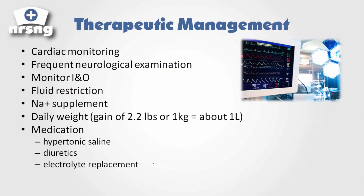So how are we going to assess and take care of our patient? First, we want to do cardiac and neurological monitoring — we really want to assess that the patient isn't reaching a point of seizures or coma and to monitor their heart rhythms. We'll monitor I's and O's and take daily weights. A gain of 2.2 pounds or one kilogram is equal to about one liter of fluid, so accurate daily weights are an important way to track fluid gain. Fluid restriction is really the most important therapeutic way to manage these patients.